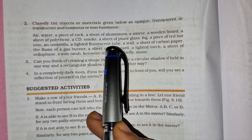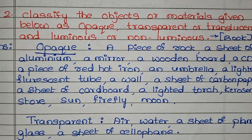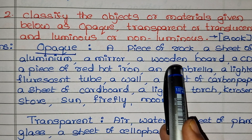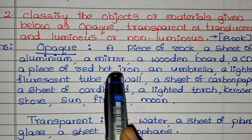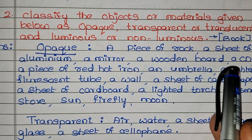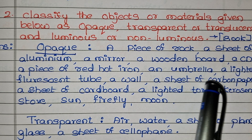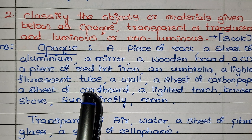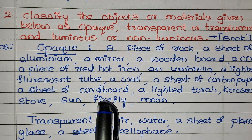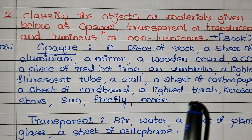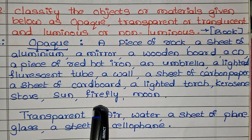A piece of rock, a sheet of aluminium, a mirror, a wooden board, a CD, a piece of red hot iron, an umbrella, a lighted fluorescent tube, a wall, a sheet of carbon paper, a sheet of cardboard, a lighted torch, kerosene, stove, sun, firefly, moon.